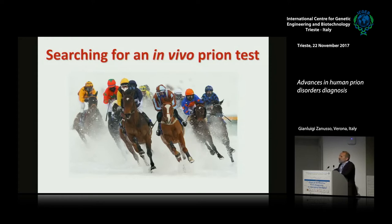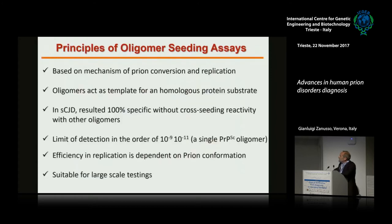The problem is searching for an in vivo prion test. When there was the BSC epidemic, finding a blood test was a major priority for several years. There are oligomer seeding assays characterized by a mechanism of prion conversion or replication. The oligomers act as templates of homologous protein structure. In CJD, they are highly specific and sensitive. The limit of detection is in the order of femto- to attomolars — 10 to the minus 11. The efficiency of replication is dependent on the conformation of the PRP, and it might also be suitable for large-scale testing.